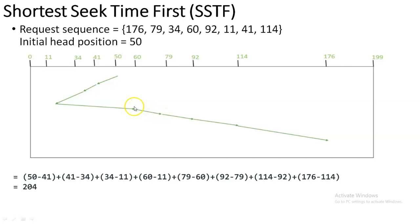Continuing from 60, you go to 79, then 92, then 114, and then 176. It is very simple — whichever request sequence is nearest to the current position you visit them first. That is called Shortest Seek Time First. Similarly you are going to calculate the total seek count.